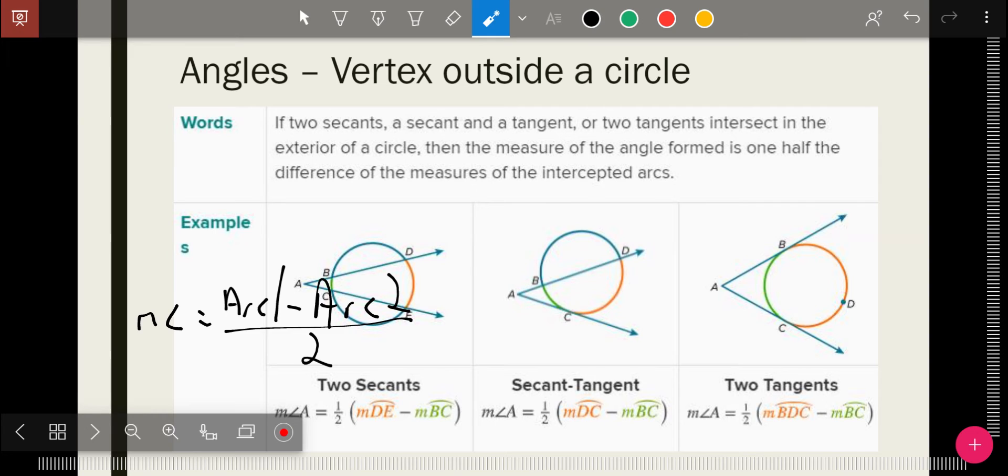So all of those three rules: vertex inside means you add the arcs and divide by two. Vertex on the circle is just half the arc. And vertex outside a circle is subtract the arcs and divide by two. So you need to know those three rules. Also, you're finding the angle every time here. If we're ever finding the arcs, then we have to go in reverse. So we're not going to divide by two, we're going to multiply by two.